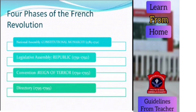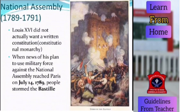There were four phases of the French Revolution. First, the National Assembly, where constitutional monarchy was formed. Then the Legislative Assembly, where the government turned into a republic. Then the Convention, which was a period of Reign of Terror. And lastly, the Directory. In the National Assembly phase, a written constitution was given, constitutional monarchy was established, and the Bastille was stormed because it was considered representative of the position of the monarch.